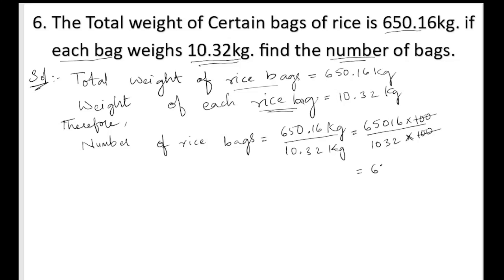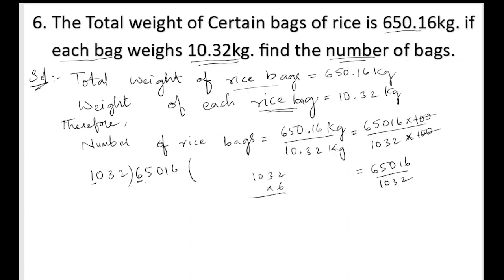We need to divide 65016 by 1032. Since 65016 is a five-digit number and is bigger than 1032, let us see in the multiplication table what is nearest to 6. It is 6 itself, so we multiply by 6. 1032 times 6 equals 6192.